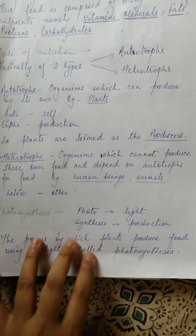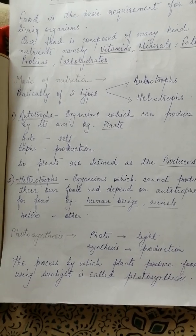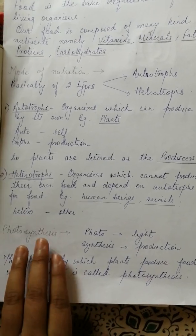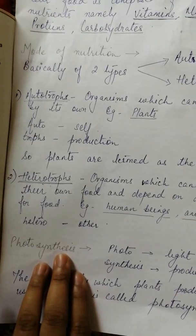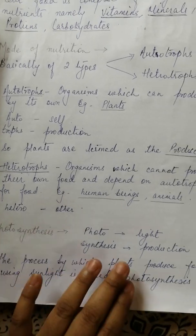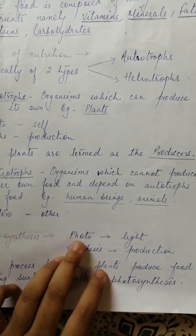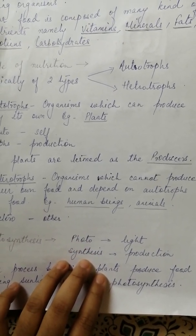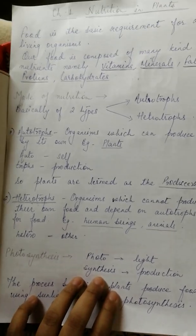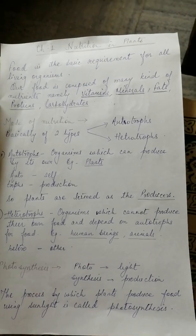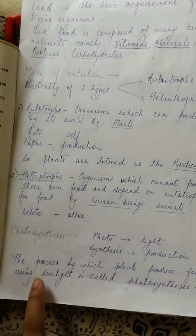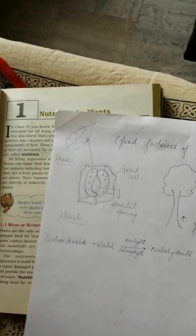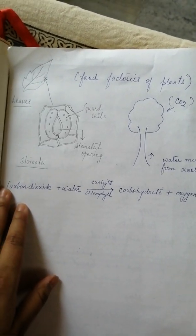A question must be arising in your mind: whether food is prepared in the whole plant or in a certain part of the plant. The term photosynthesis is made up of two small words — 'photo' means light and 'synthesis' means production. A simple definition of photosynthesis is: the process by which plants produce their own food with the help of sunlight.